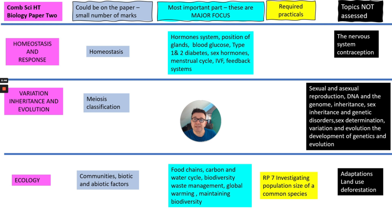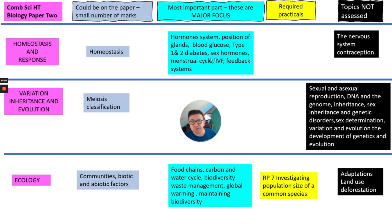This is Paper 2. There are three units you're going to be examined on. Homeostasis and response is pretty heavy here — you've got all the hormones, blood glucose, insulin, glucagon, type one and two diabetes, menstrual cycle, IVF, and feedback systems. But there's nothing on the nervous system or contraception.